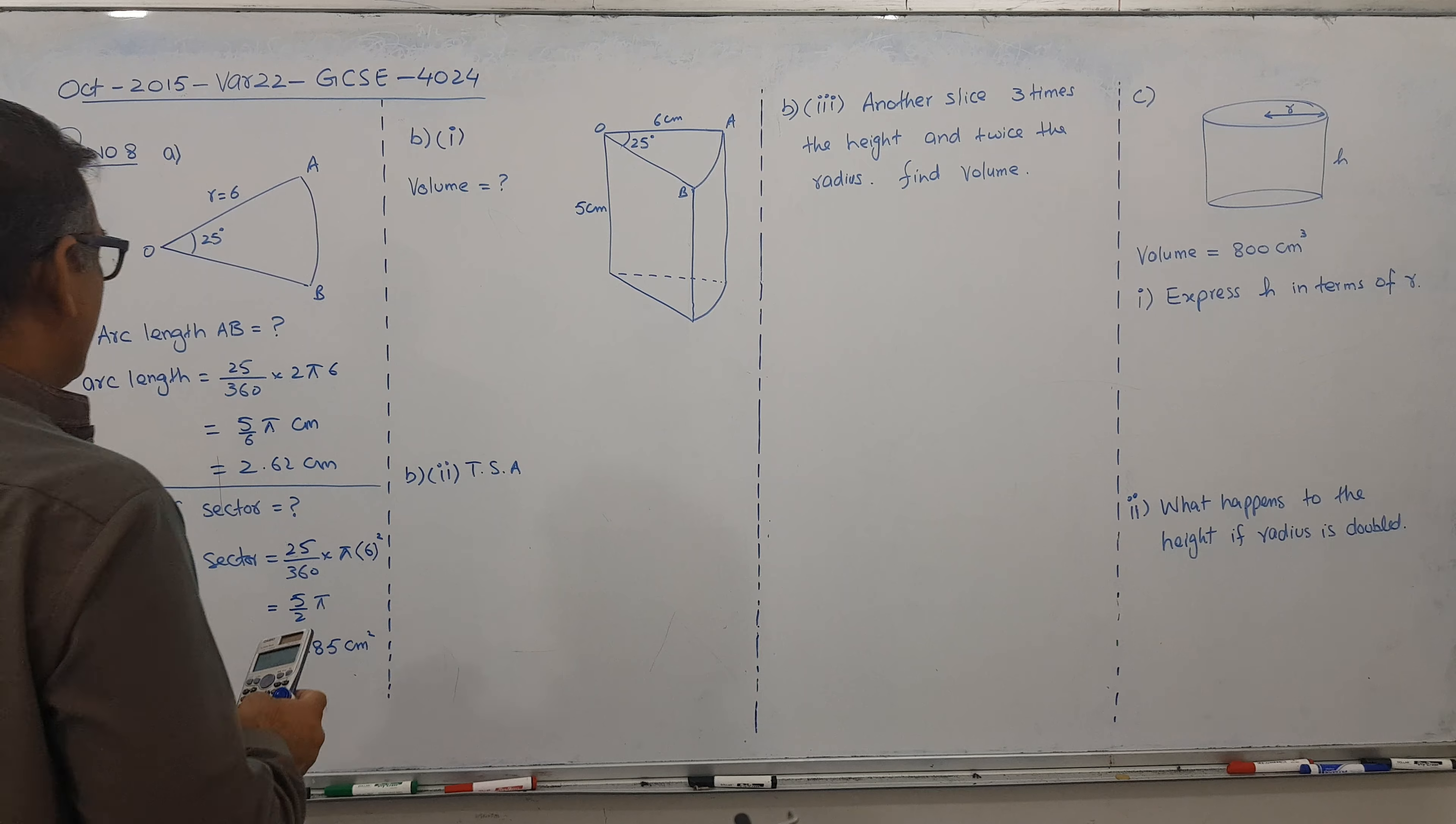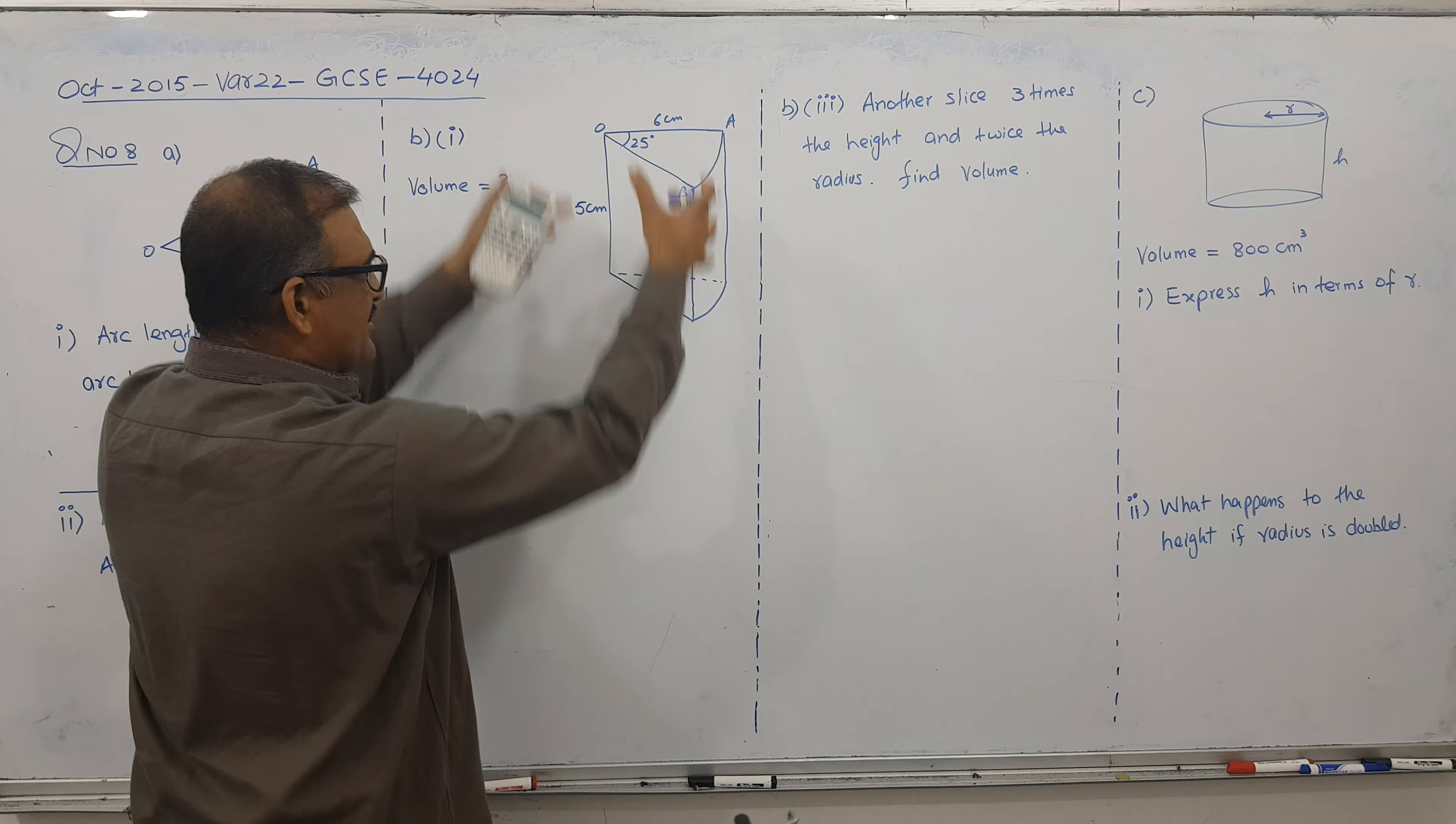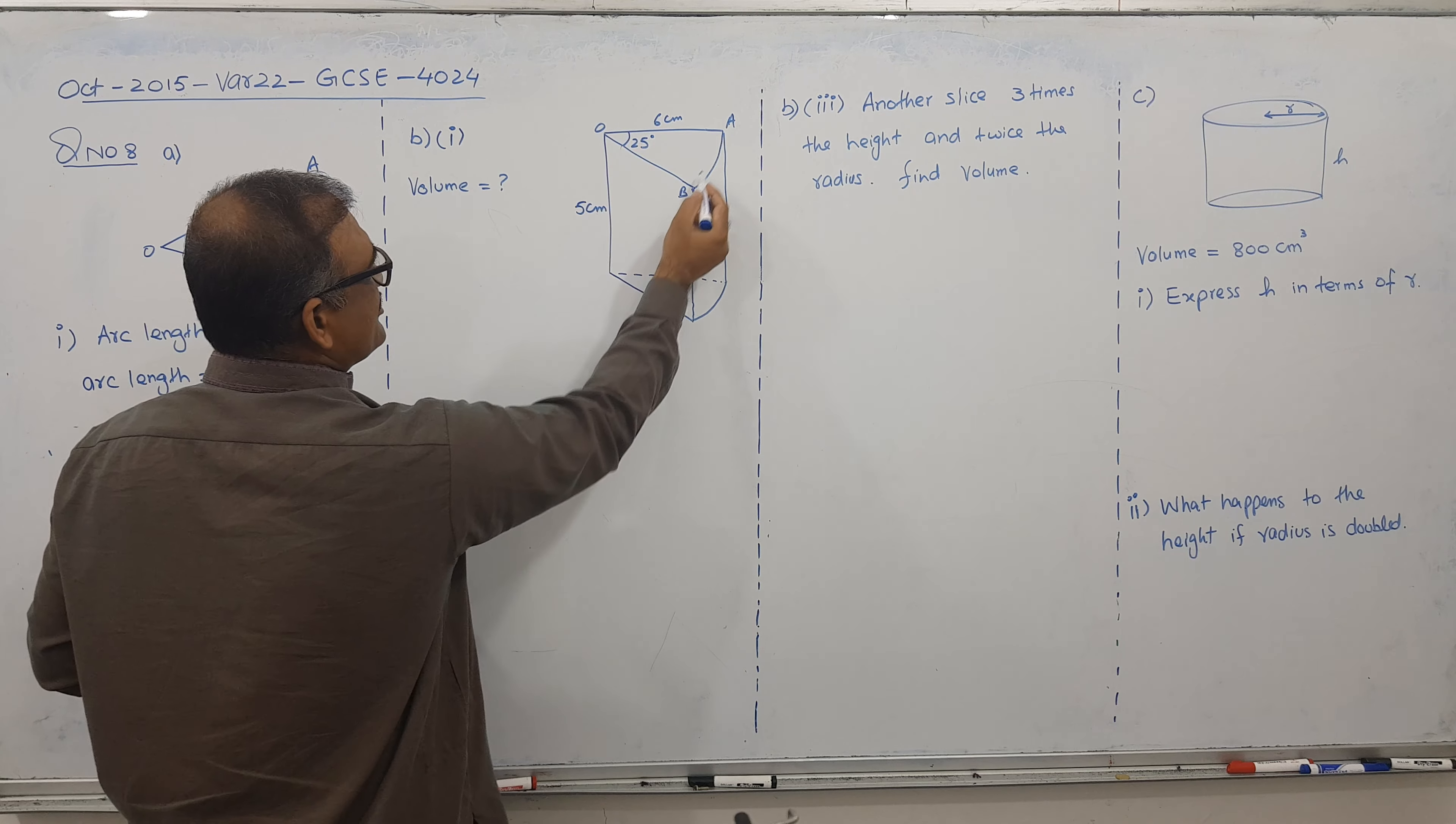Let's go for the next part. Volume. We have a special formula for a prism. It's a regular prism. And this is called cross area.